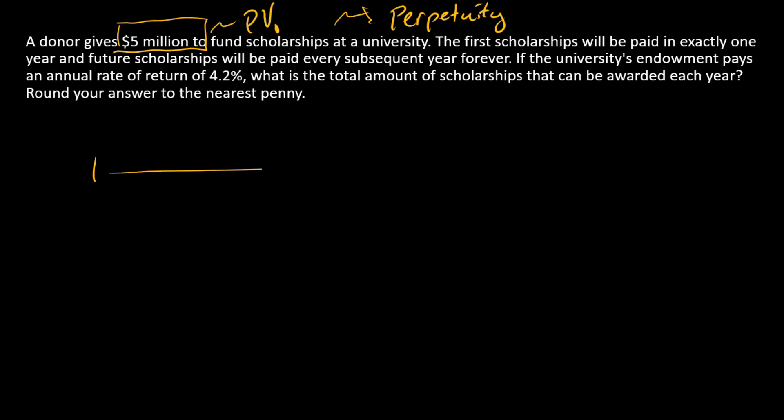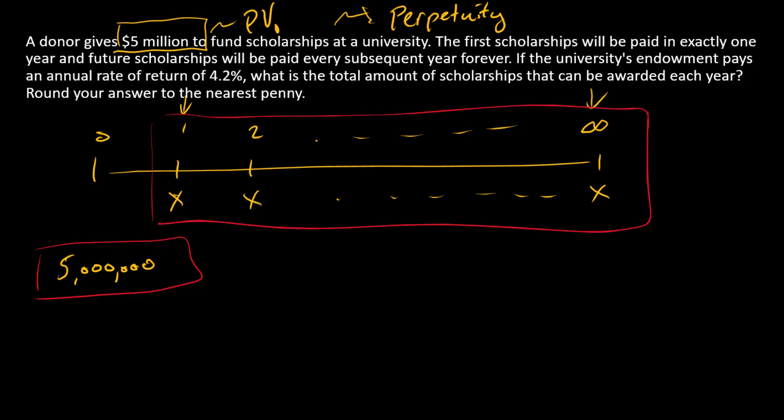Okay, so the timeline for what's going on here looks like this: we're going to have some constant amount, we'll just call that X, being paid out every year from year one until year infinity. And again, we know that this thing is worth five million today. We're going to swap five million today for this series of cash flows, and so five million dollars is the present value of this perpetuity.